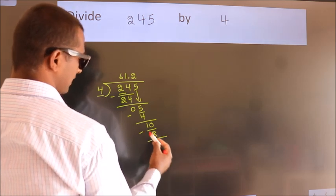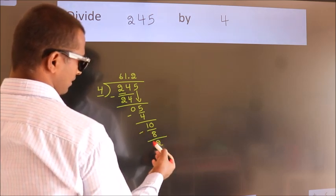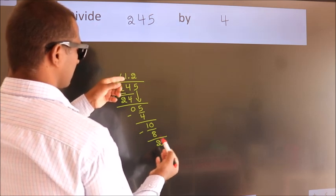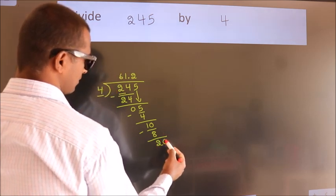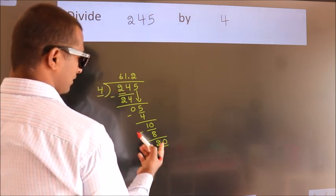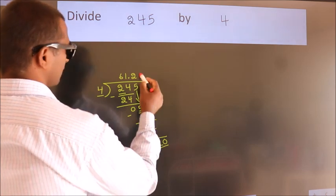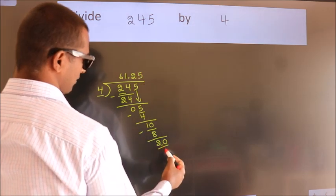Now, we subtract. We get 2. So, after this, we already have the decimal. So, directly take 0. So, 20. When do we get 20? In 4 table. 4, 5, 20.